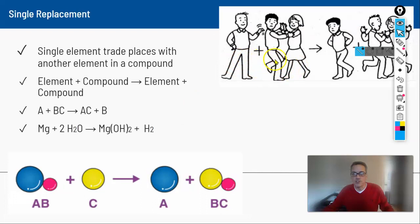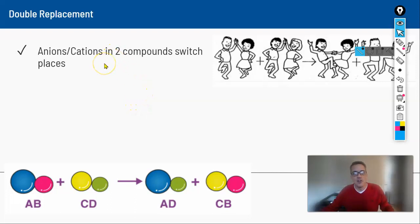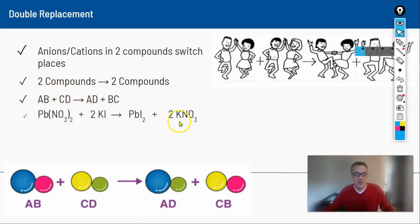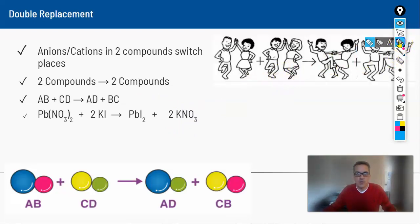A double replacement is similar, but instead of one element cutting in, two compounds just switch partners — like two couples swapping dance partners. We start with two compounds and end with two compounds. In general form: AB + CD → AD + BC. The key indicator is two compounds turning into two compounds with the inner components switching partners.